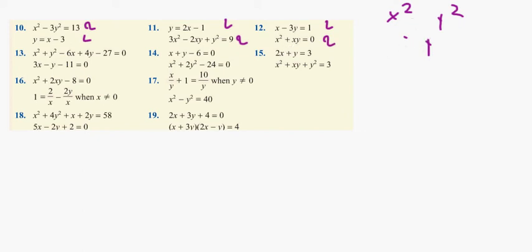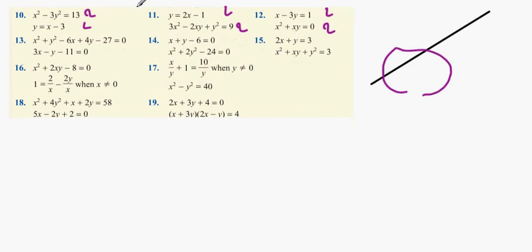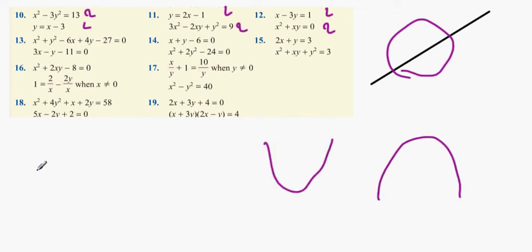What usually happens is linear equations are usually lines. Quadratic equations are usually circles, they can be circles, they can be n-shaped graphs, u-shaped graphs, curves, like this.